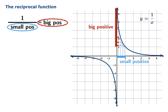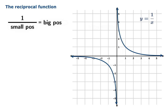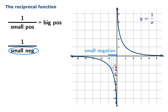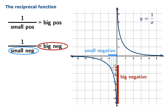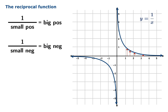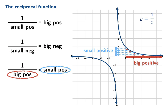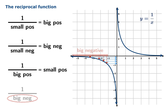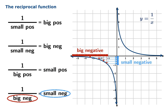Similarly, if you plug in a number between negative 1 and 0, the value turns out to be less than negative 1. So the reciprocal of a small negative number is a big negative number — again, small and big refers to the magnitude here. You can try out other examples: the reciprocal of a big positive number is a small positive number, and the reciprocal of a big negative number is a small negative number.